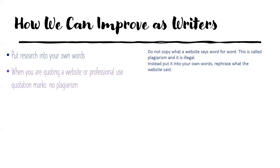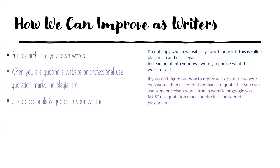The second thing we need to improve on is: when we're quoting a website or professional, use quotation marks. We don't want any plagiarism — no copying other people's words. A lot of you did use professionals and quotes, but some of you didn't use any professional quotes at all. If you can't figure out how to rephrase something, use quotation marks to quote it. If you ever use someone else's words from a website, you must use quotation marks or it's considered plagiarism.